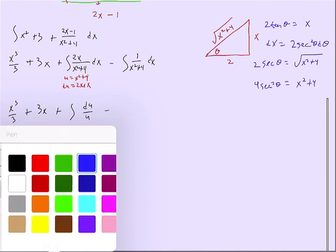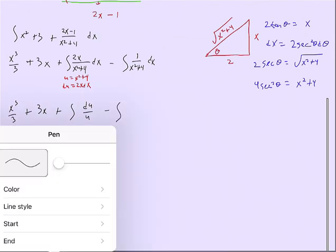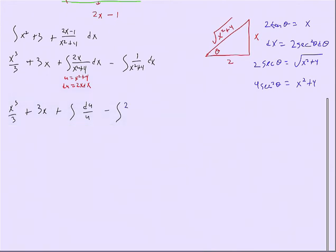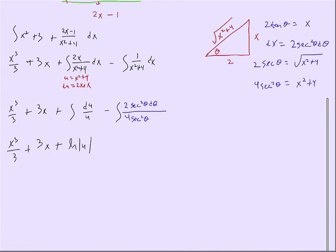Now we do our substitutions. This becomes minus the integral where dx becomes 2 secant squared theta d theta, and x squared plus 4 becomes 4 secant squared theta. Our first terms — x cubed over 3 and 3x — are done. The integral of du over u is just the ln of the absolute value of u. And the integral of 2 secant squared theta d theta over 4 secant squared theta: the 2 over 4 gives one half, and the secant squares cancel. So it's just the integral of one half d theta, which is one half theta.